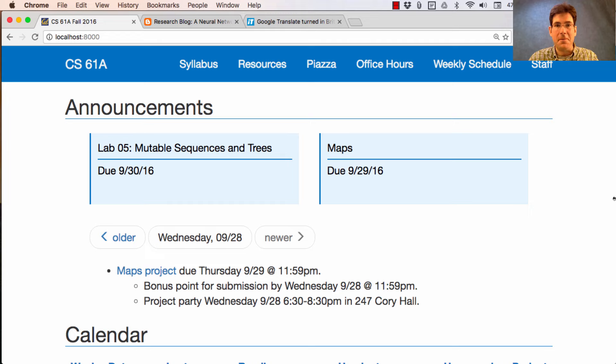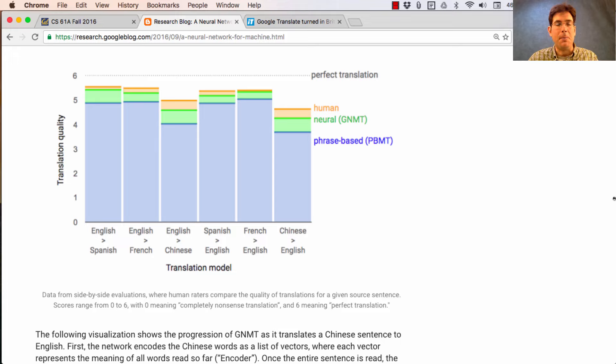Since I have so few announcements, I thought I'd tell you about something exciting that's happening in the world of computer science. Google just published a paper describing their new neural machine translation system. This is a different approach to translation, still fully automatic, but incorporates information about the text being translated in a different way than what they did before.